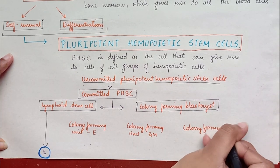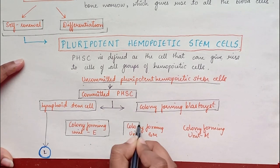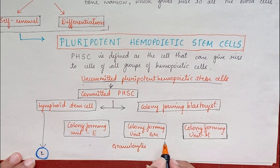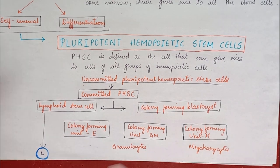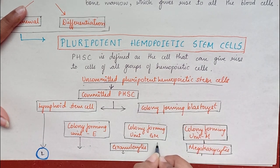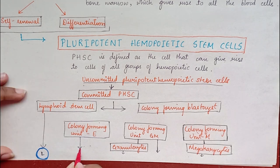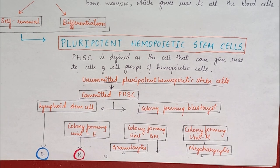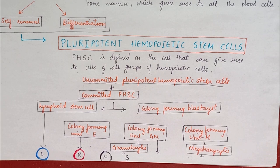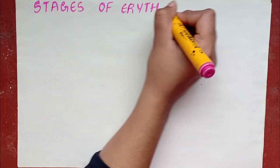The different units of colony forming cells are: colony forming unit E, colony forming unit granulocytes, and colony forming unit megakaryocytes, which are responsible for the formation of erythrocytes, basophils, neutrophils, eosinophils, monocytes, and platelets.